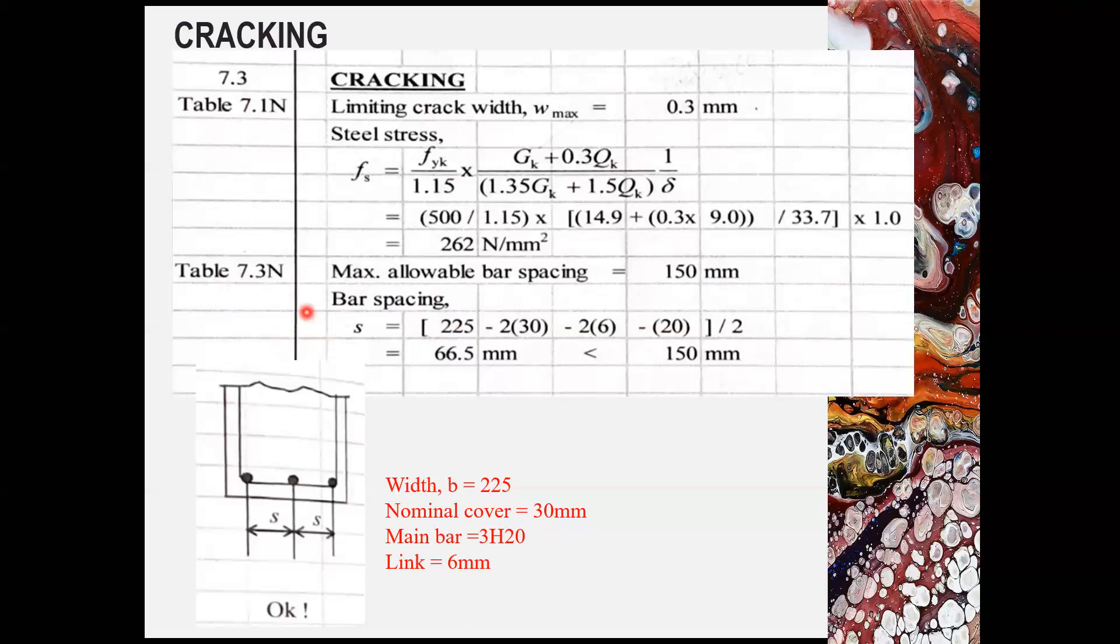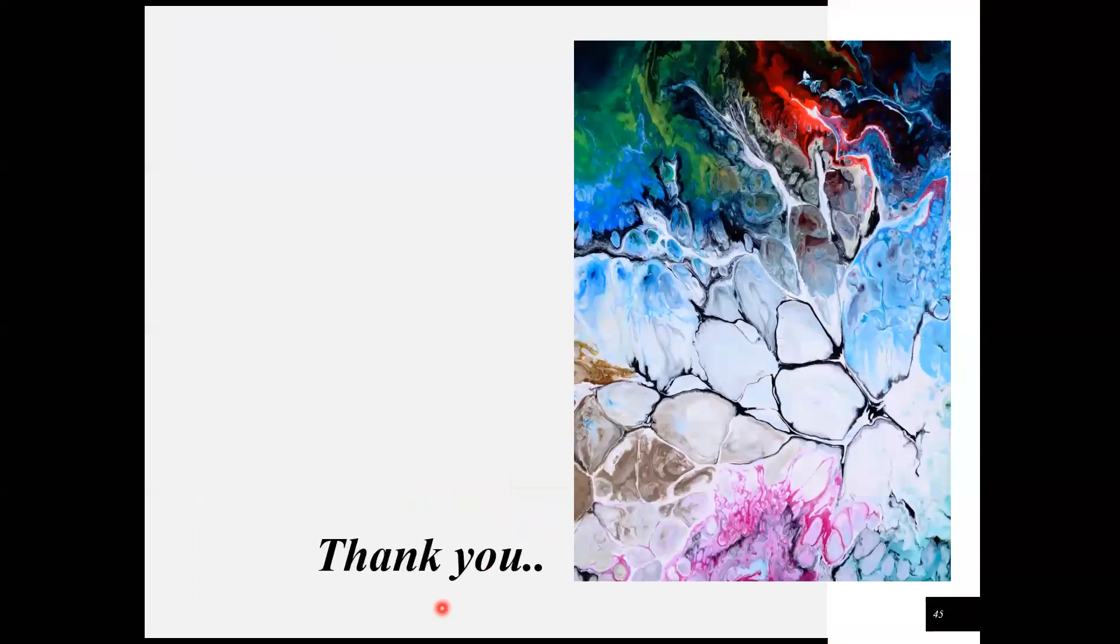Compare this actual bar spacing with the maximum allowable bar spacing. So now 66.5 is less than 150. The cracking check is satisfied. I end my video on deflection and cracking checks for RCB. See you in my next video. Bye.